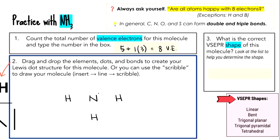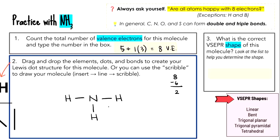Now it's time to bond them. Draw three bonds — that's six electrons total. Eight minus six leaves two electrons. Where do those two go? Hydrogen is happy with two, and each hydrogen already has two electrons coming from the bond. So if the outside atoms are satisfied, those two leftover electrons go on the central atom — nitrogen. This is called a lone pair. Two minus two equals zero — we used all the electrons.